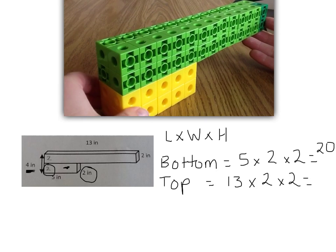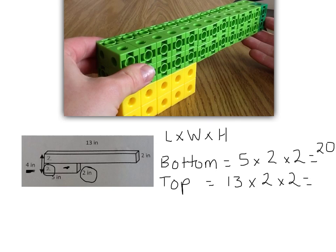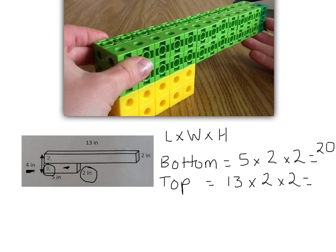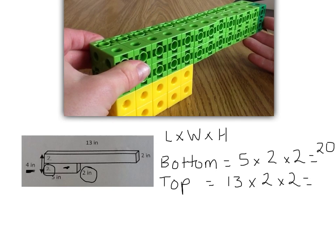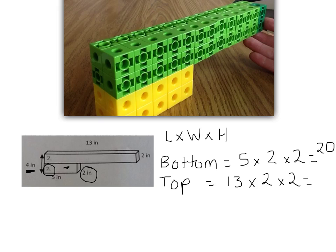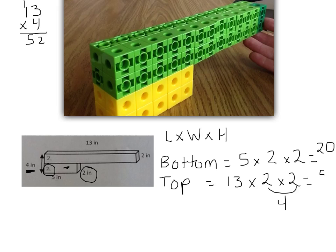Once I find the volume of my yellow prism and then my green prism — my bottom and top prisms — I can add those two volumes together to get the total. So now I have my top prism, and I have to solve for it. I'm going to multiply 2 times 2 to get 4, and now I have to multiply 13 by 4. You can always show your work on the side: 4 times 3 is 12, carry the 1; 4 times 1 is 1, plus 1 more is 5, so I get 52.